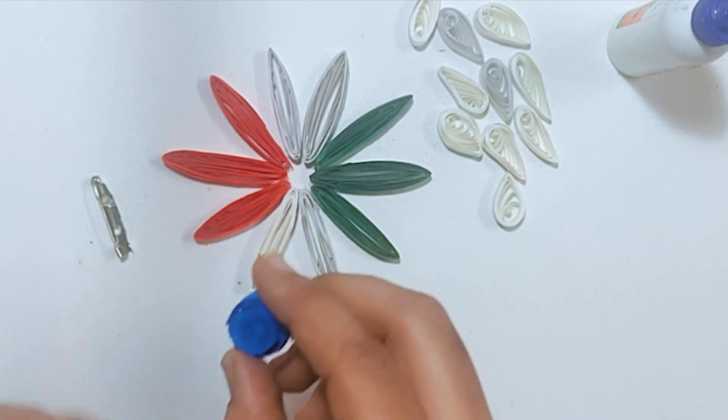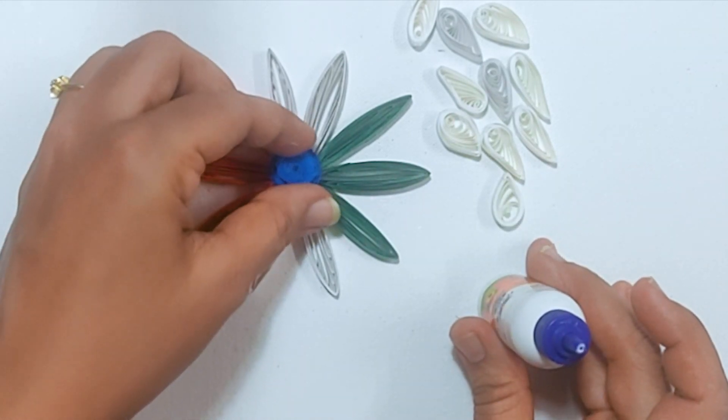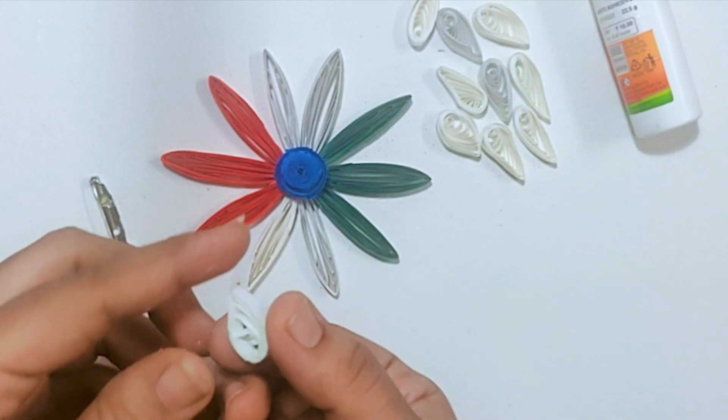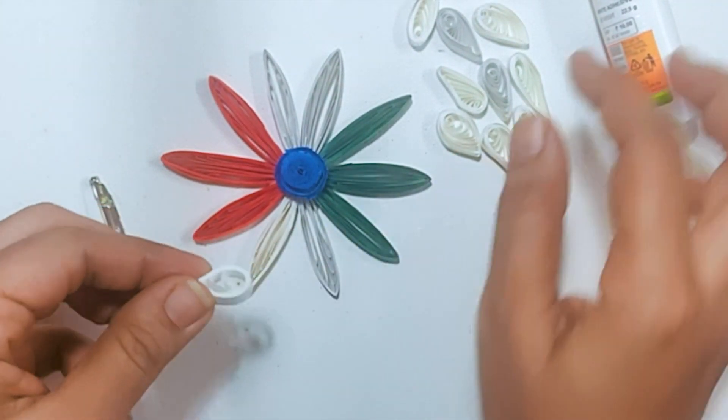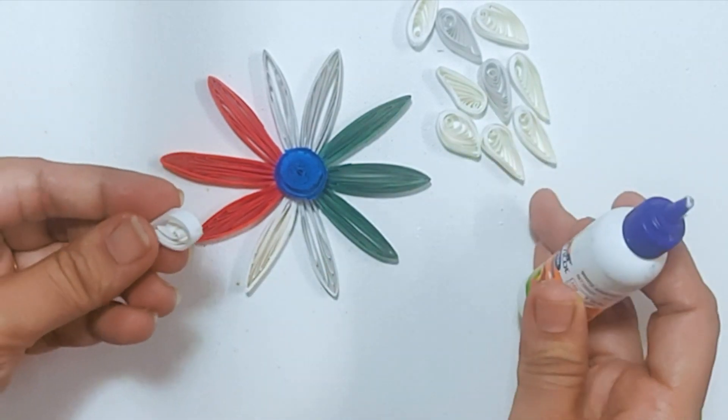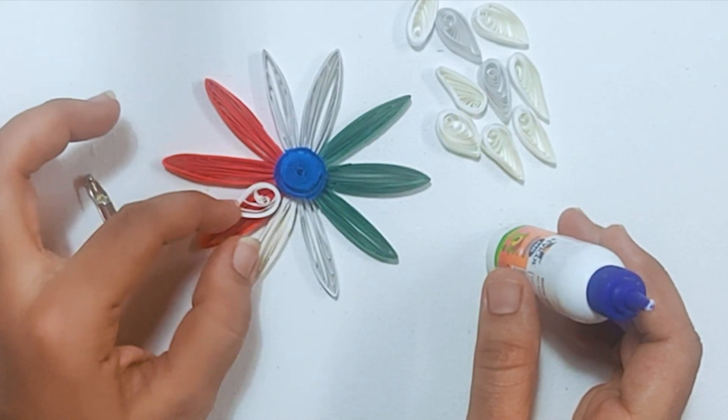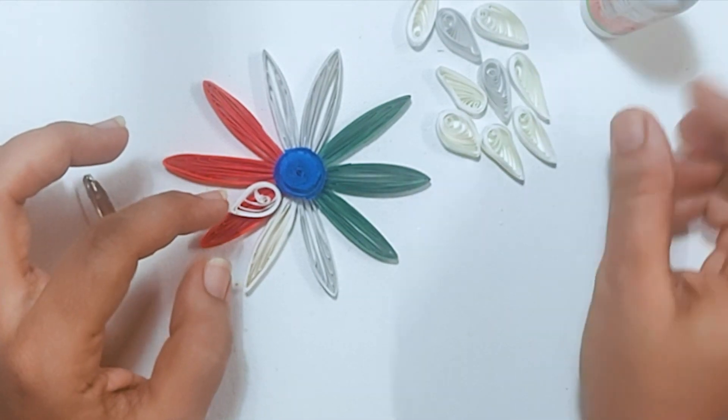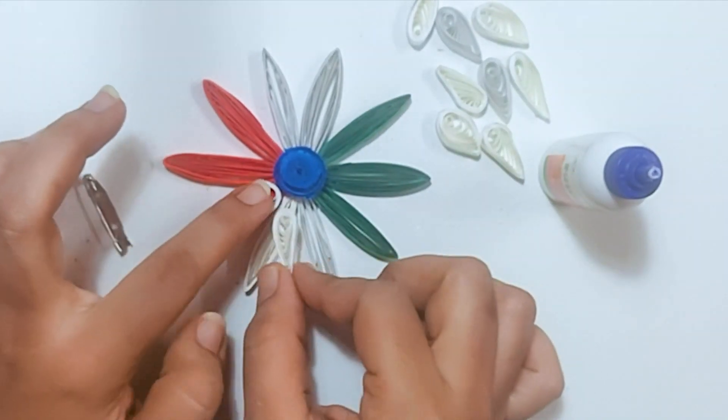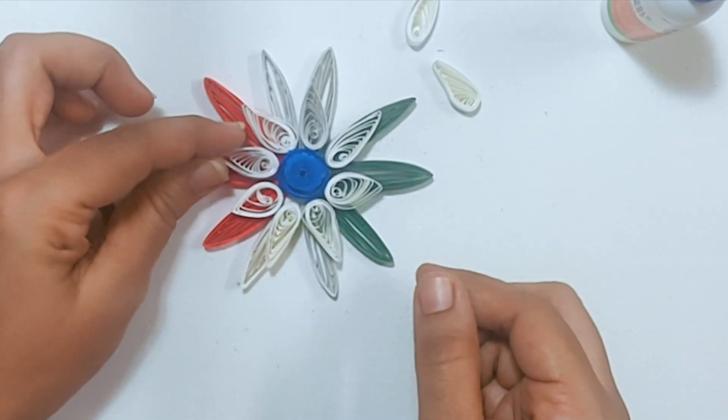Once you do that, take your blue chakra, put some glue behind, and secure it in the center of the flower. After that, take all your white petals, put some glue in the edges, and secure it between the two long petals in this fashion. Secure all the white petals exactly like this and give it enough curing time.